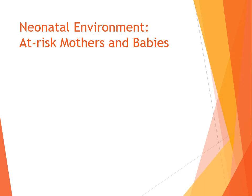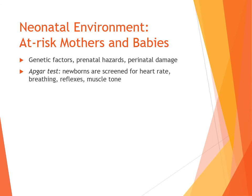At-risk environments can result from genetic factors, anything that happened in the prenatal environment (like teratogen exposure), and perinatal damage during the birthing process. As a first test, newborns undergo the Apgar test, screening for heart rate, breathing, reflexes, and muscle tone. Scores range from one to ten — a score of eight or nine indicates a very healthy baby, while anything less than six is cause for concern. Most babies score between seven and nine.